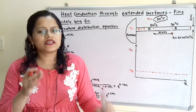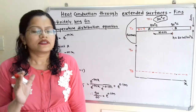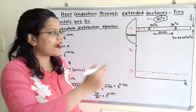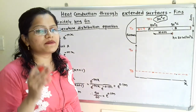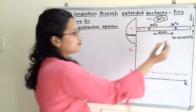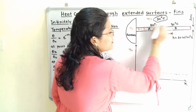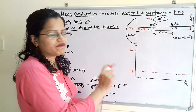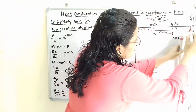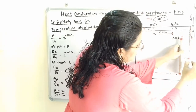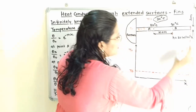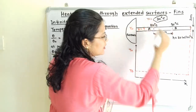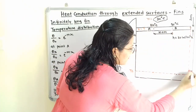Let us understand the given data with a diagram. The long rod has diameter 2 cm and one end is inserted in the furnace. We treat this rod as infinitely long. At the end of the rod, theta equals 0, meaning the temperature at the end equals T_F. The furnace temperature T_O is higher than the surrounding temperature but is not explicitly given.